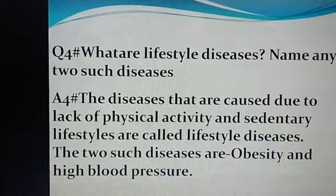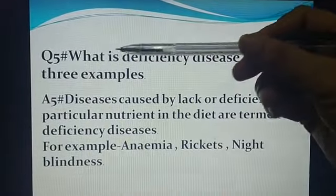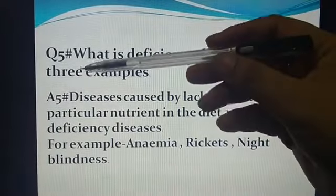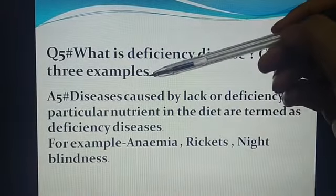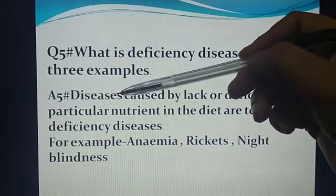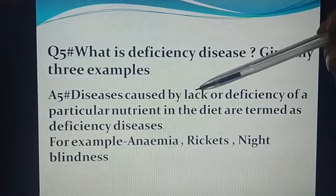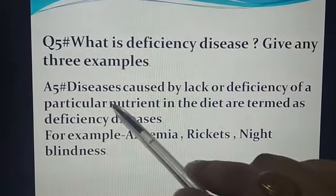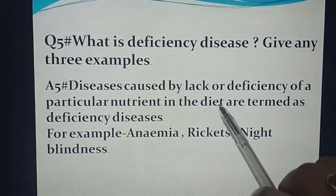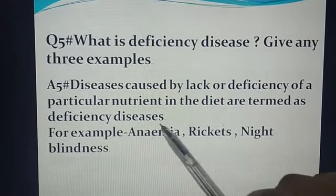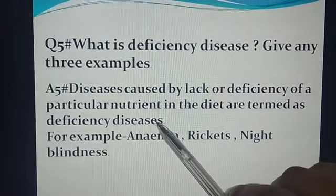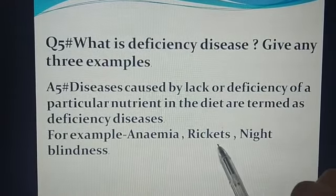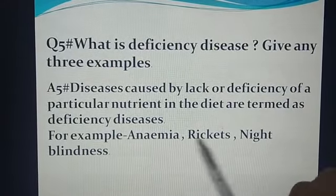Question number 5: What is deficiency disease? Give any three examples. Answer: Diseases caused by lack or deficiency of a particular nutrient in the diet are termed as deficiency diseases. For example, anemia, rickets, and night blindness.